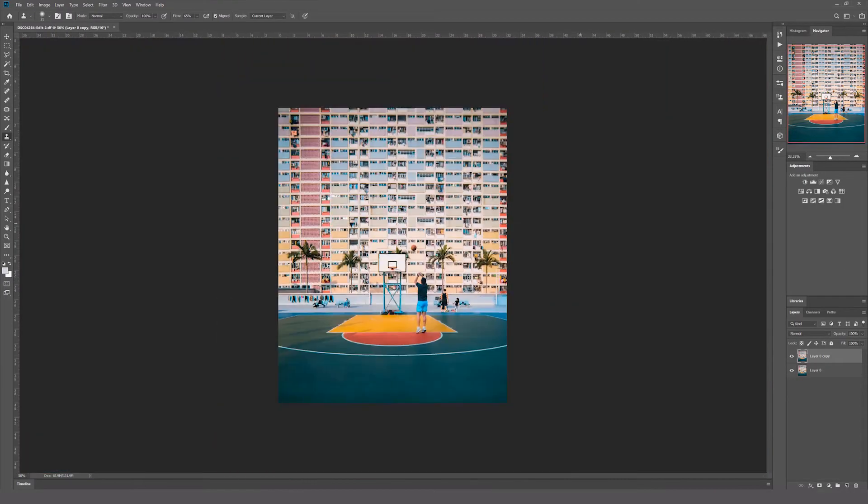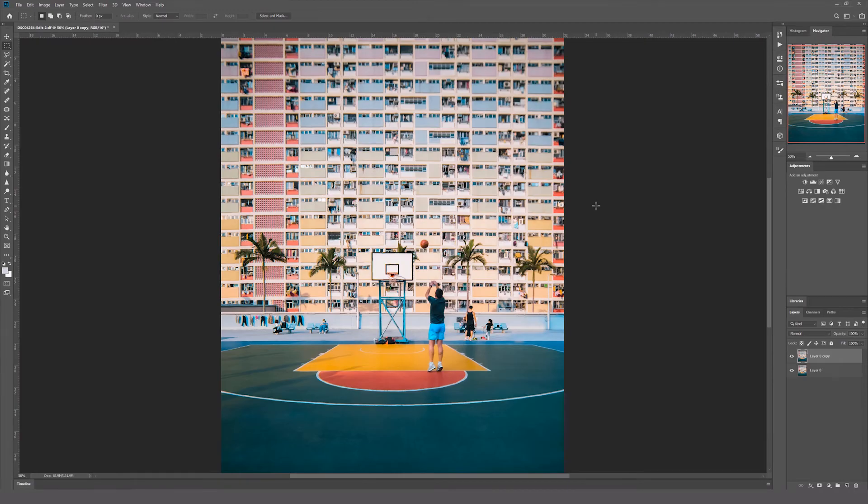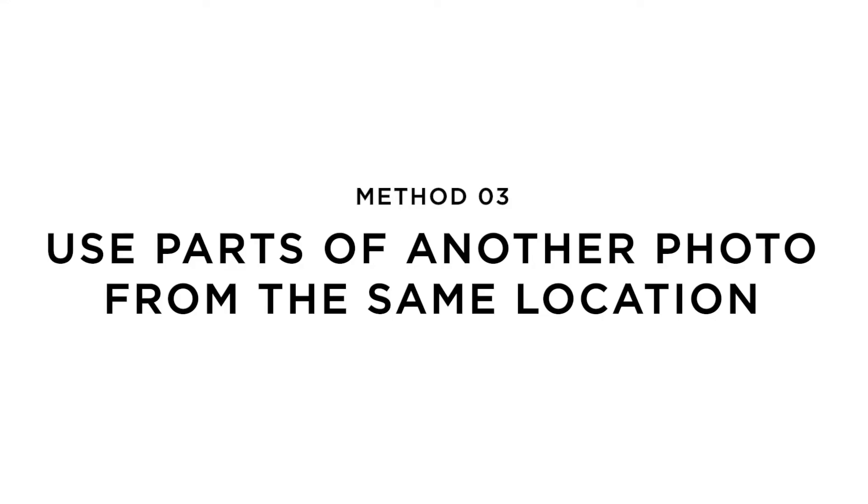I'll be going over how to work on the really difficult areas like the benches for method three. Method number three is to use parts of other photos from the same location but with no people in those parts. This method requires a little bit of planning when you're out shooting — shoot from the same location, and you don't necessarily need a tripod, but it could help. Make sure every frame you take has no person in each part of the photo. This method probably gives you the most control in getting rid of unwanted people. Let's jump into Photoshop.